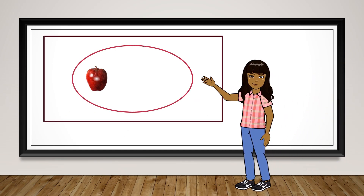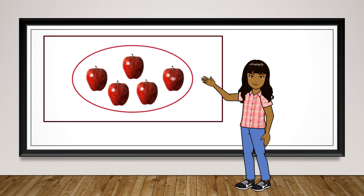Here we have an example of a finite set: a set of fruits with five elements. As you can see, this set has a specific number of elements and we can count them — one, two, three, four, five apples. A set of five apples.